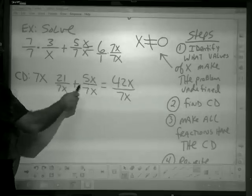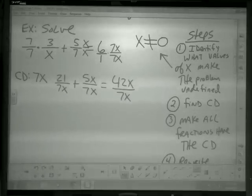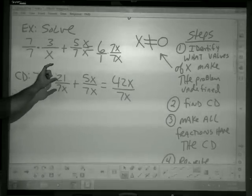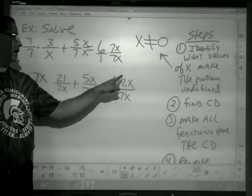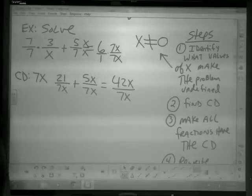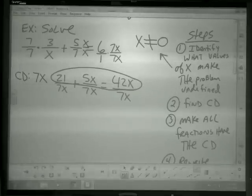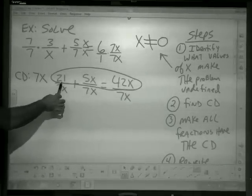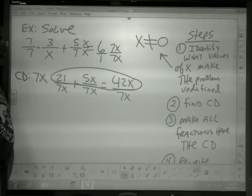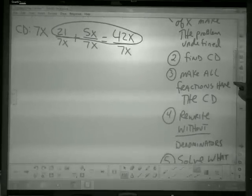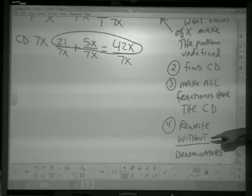On this side, if you wanted to, you could have written them all over one fraction like we did before. It doesn't make a difference. But we have to make sure that they all have the same denominator. Now, what's really neat about fractions is if they're all over the same denominator and this side of the equal sign is equal to this side. The only way fractions with the same denominator can be equal to each other is if the top parts are equal to each other. And with that in mind, the next step is to just rewrite the fraction without the denominators.